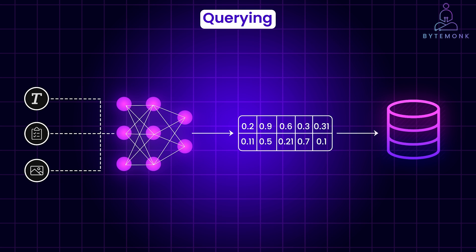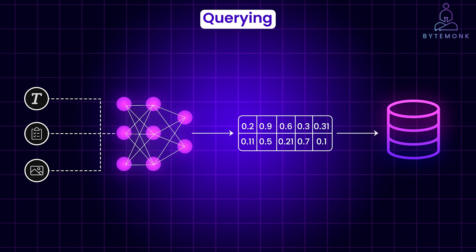Vectors, especially when they have many dimensions, can be difficult to visualize directly. So a simplified three-dimensional space generally helps in understanding the fundamental vector concepts.